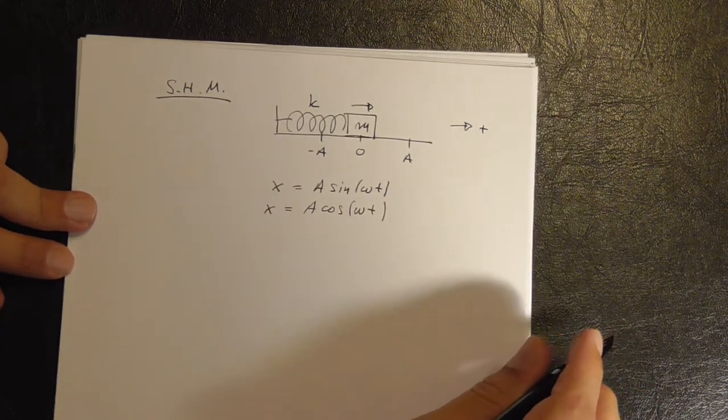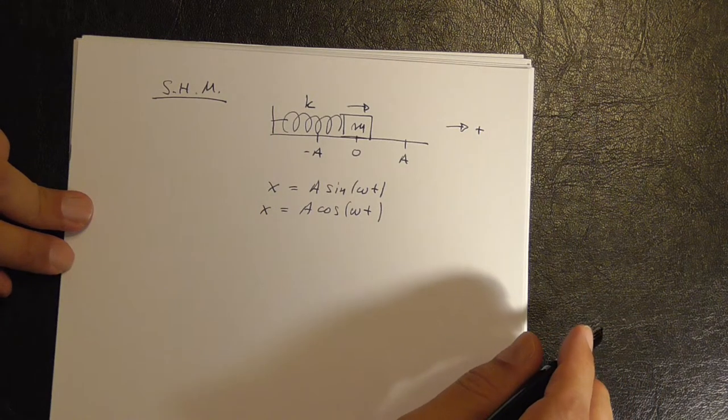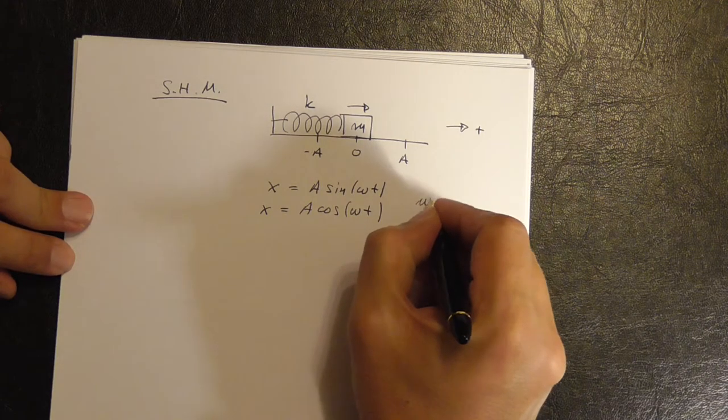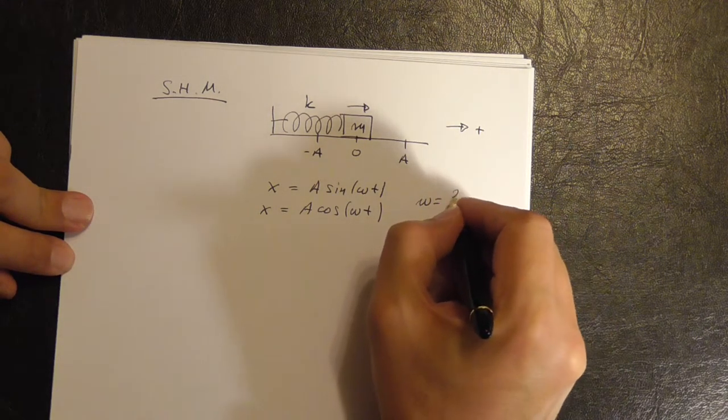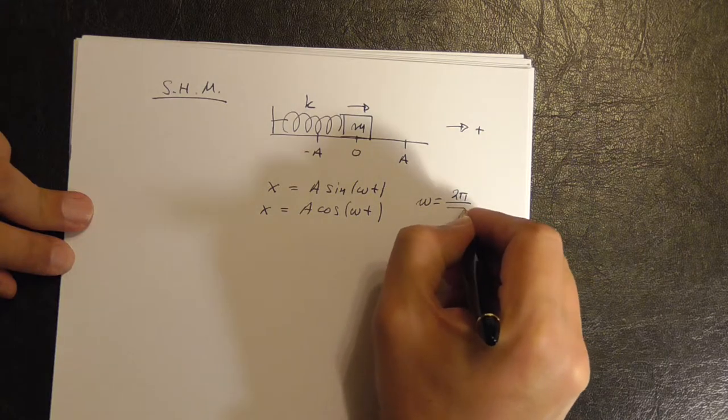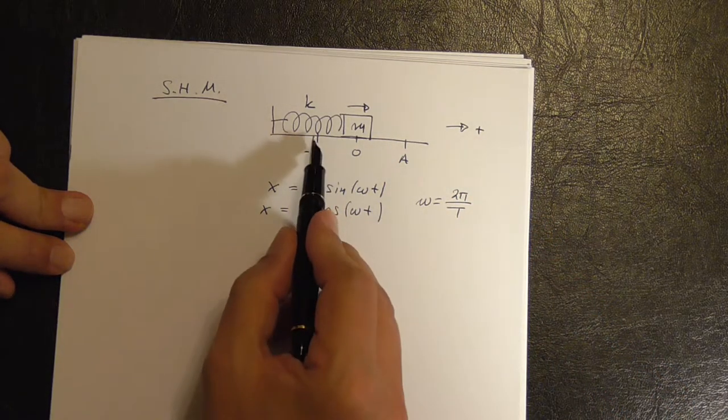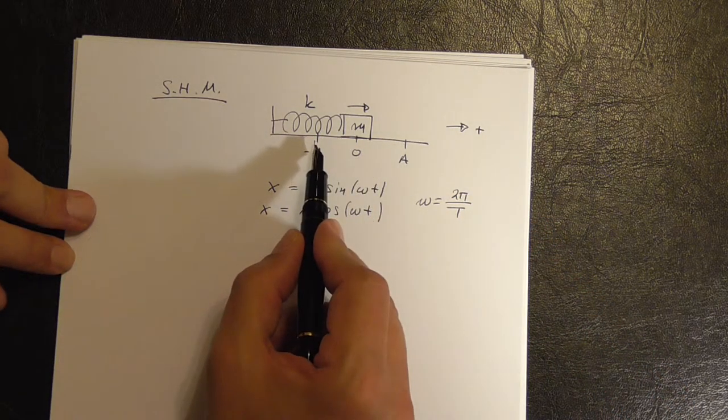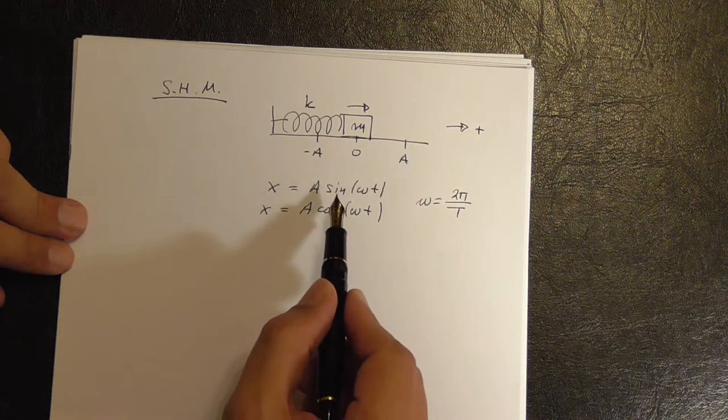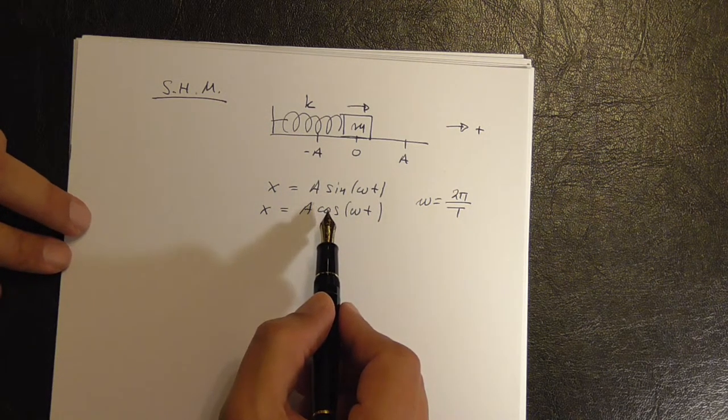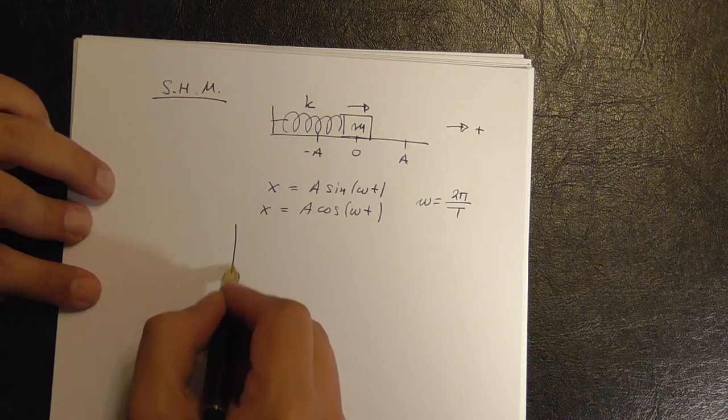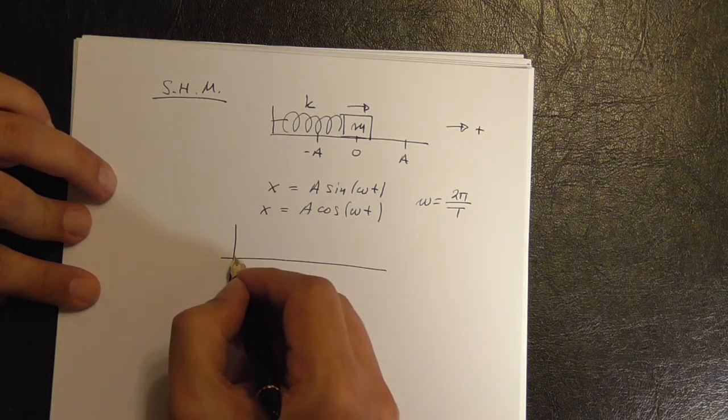Where omega is called the angular speed or the angular frequency and this is 2π over the period, the time for one complete oscillation. So these are called harmonic functions because they look like nice smooth functions.